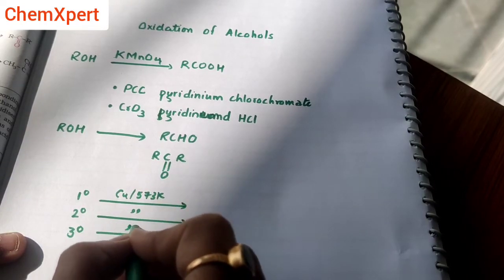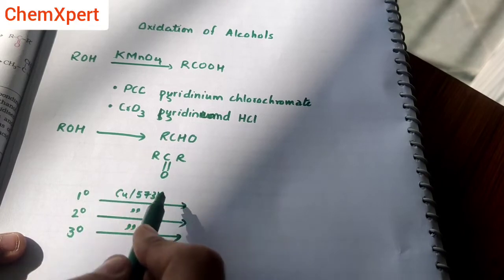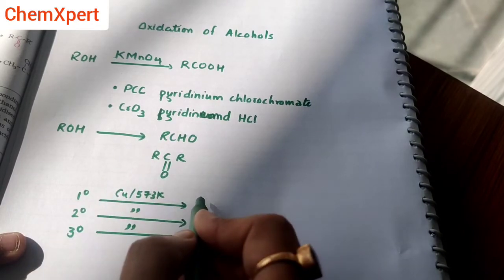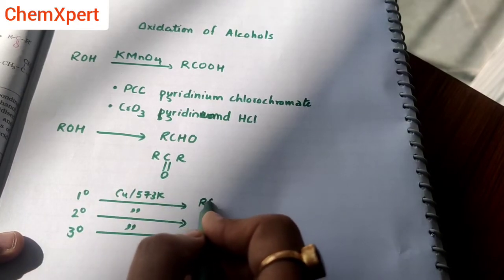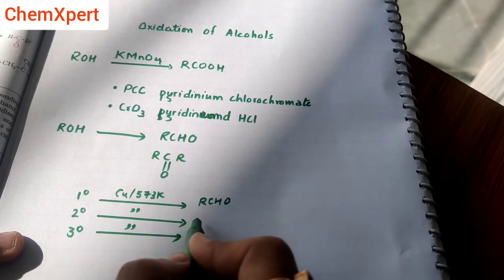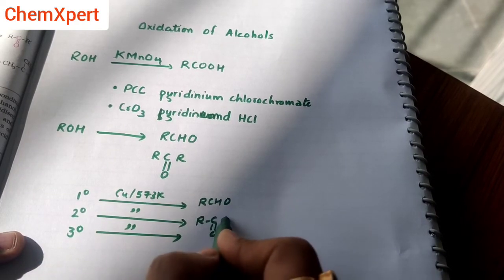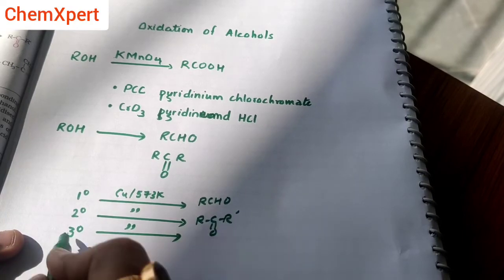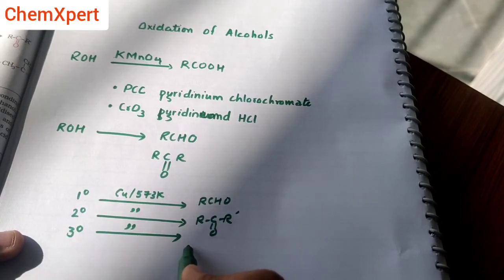This is a very important metal with temperature you have to learn. In case of 1° alcohol, it forms an aldehyde. In case of 2° alcohol, it forms a ketone. Whereas in case of tertiary alcohol, it forms an alkene.